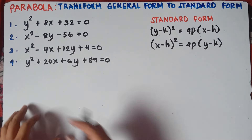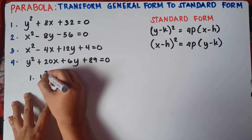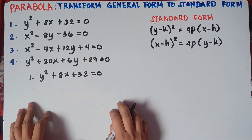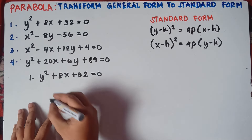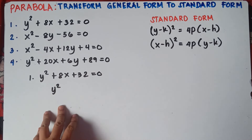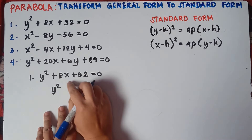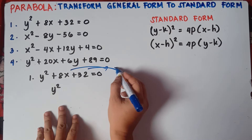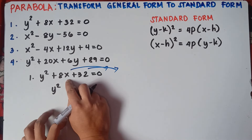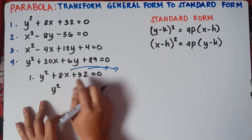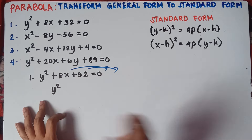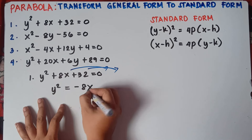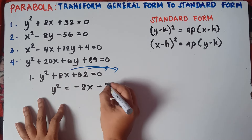Alright, let me copy the equation. We have y-squared plus 32 equals 0. So the first thing, class, is you simply copy y-squared. Then you transpose 8x and 32 from the left side to the right side. Once you transfer a term across the equal sign, you always change the sign. So this becomes: y-squared equals negative 8x minus 32.